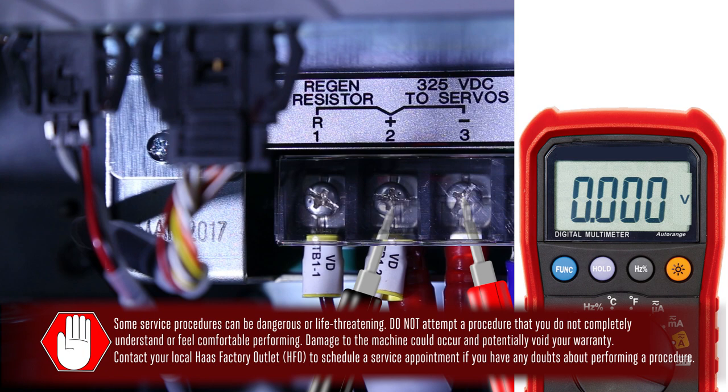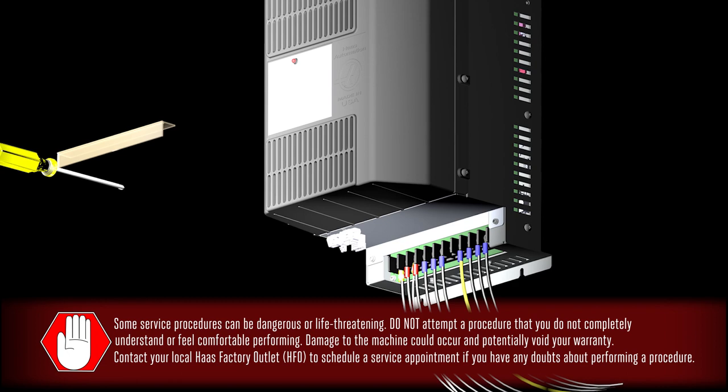Then, to double check, use a voltmeter to make sure there is no voltage at the positive and negative terminals. Once you're certain that there is no voltage in the vector drive, label and remove the leads from the DC bus.